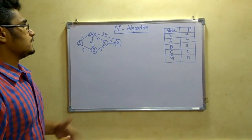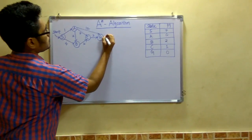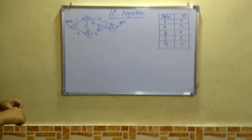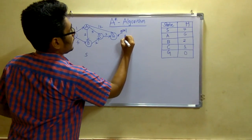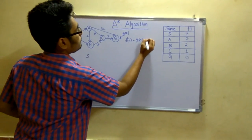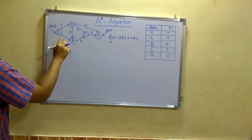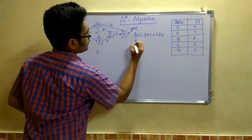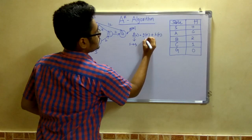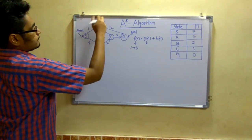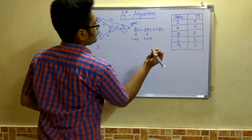Let us try to solve this problem. We have the start node and the goal node. To calculate the function we have F(n) = G(n) + H(n). F(n) is the complete path or complete distance from the start node to the goal node, including all intermediate distances. G(n) is the actual distance from the intermediate state to the goal state — from any intermediate state n to the goal node.